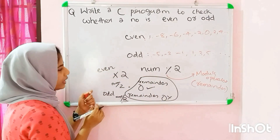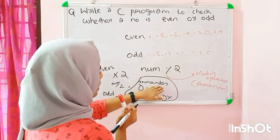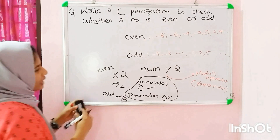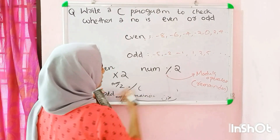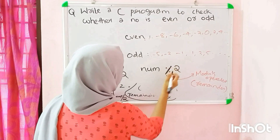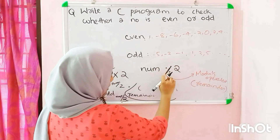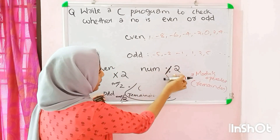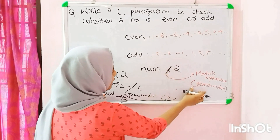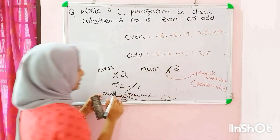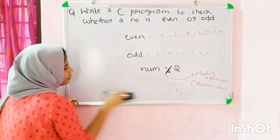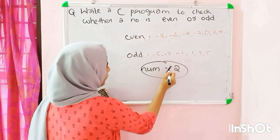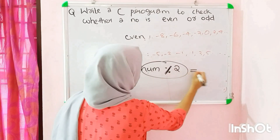If we check this remainder, we use the remainder operator — that is the modulo operator. The remainder of the modulo operator gives us the result. If the result is number mod 2 equal to zero, then the number is even.